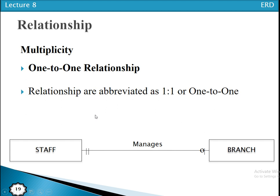Multiplicity refers to how a single occurrence of an entity type may relate to possible occurrences of an associating entity type. We have three types of multiplicity: one-to-one, one-to-many, and many-to-many relationships.